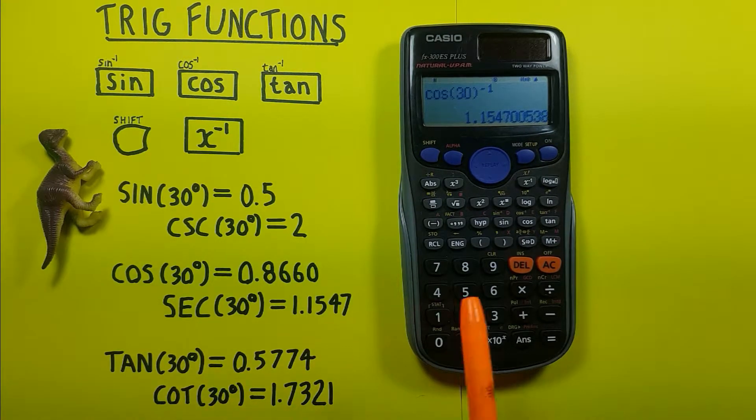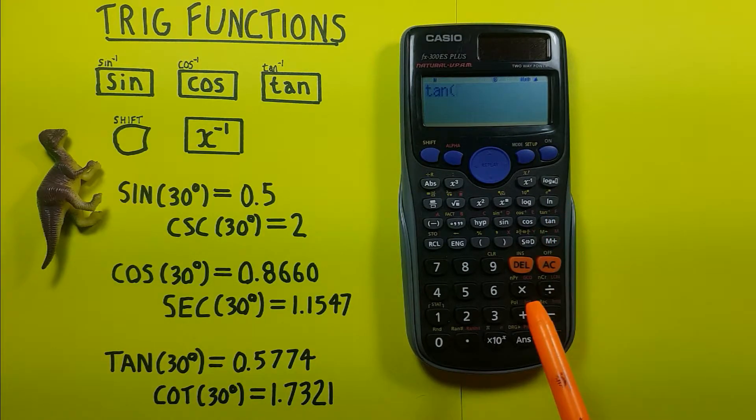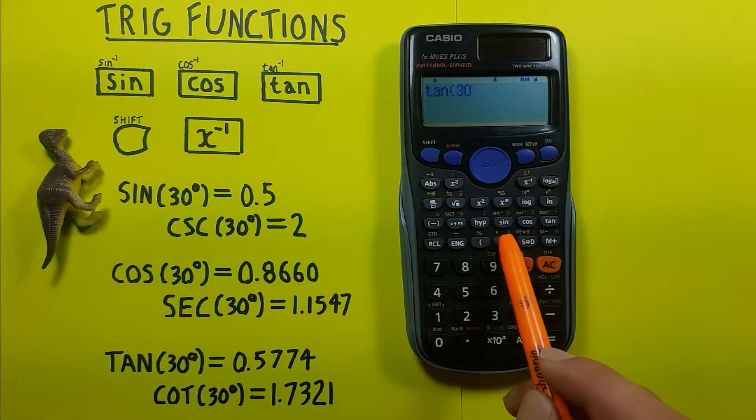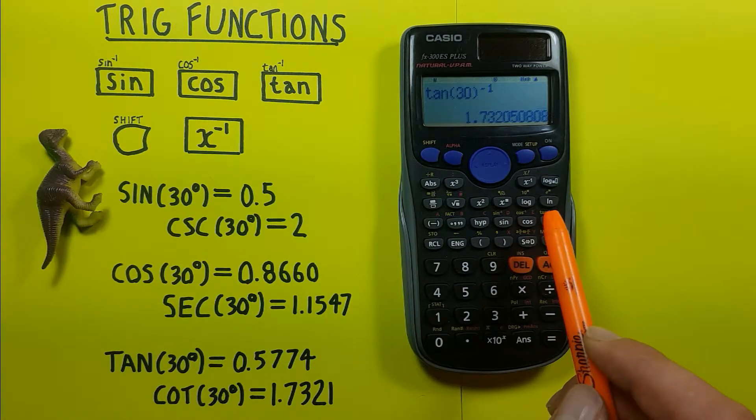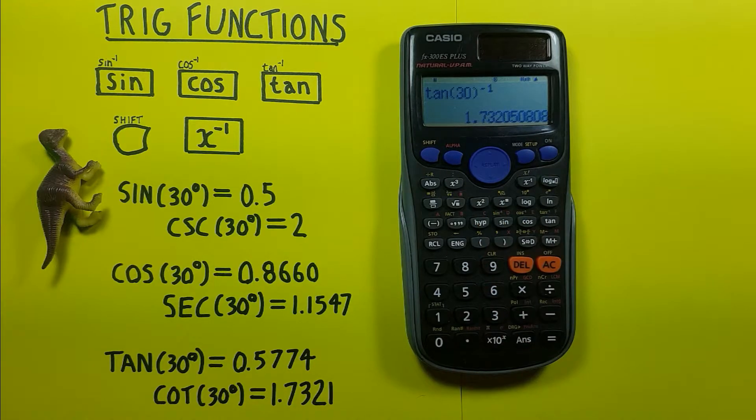Cotangent works the same. Tan 30, close our bracket, inverse, equals. And you can convert to 1.7321.